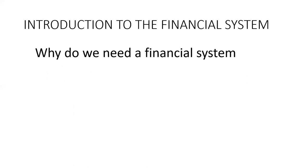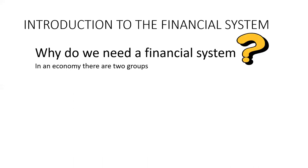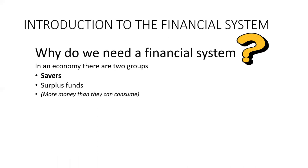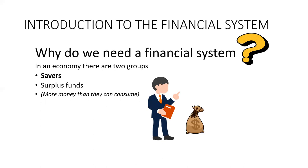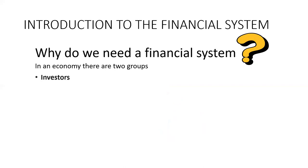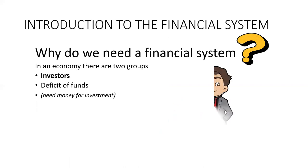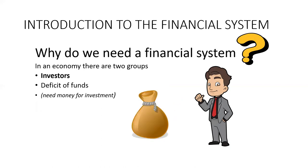The next question is: why do we need a financial system? To understand this, we must note that there are two groups in an economy. The first group are the savers — parties or individuals which have surplus funds or more money than they can consume. For example, a teacher with a monthly salary of rupees 20,000 who spends rupees 10,000 every month, leaving rupees 10,000 as surplus. The second group are investors — a person or party which is in deficit of funds, needing money for investment, such as a businessman who needs funds to finance or start a new business.